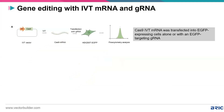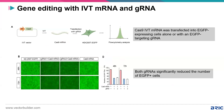Here is an example of IVT mRNA and guide RNA used for gene editing in human embryonic kidney cells expressing GFP, targeting GFP with guide RNAs. Controls — Cas9 mRNA alone and no-treatment — show high GFP expression. In both guide RNA conditions, GFP expression is reduced, indicating that IVT mRNA and guide RNA is a functionally validated delivery system.